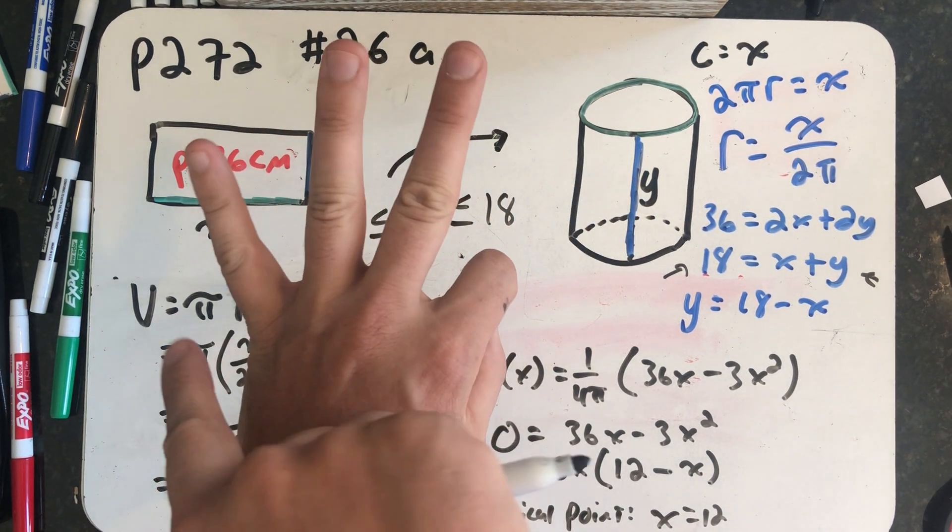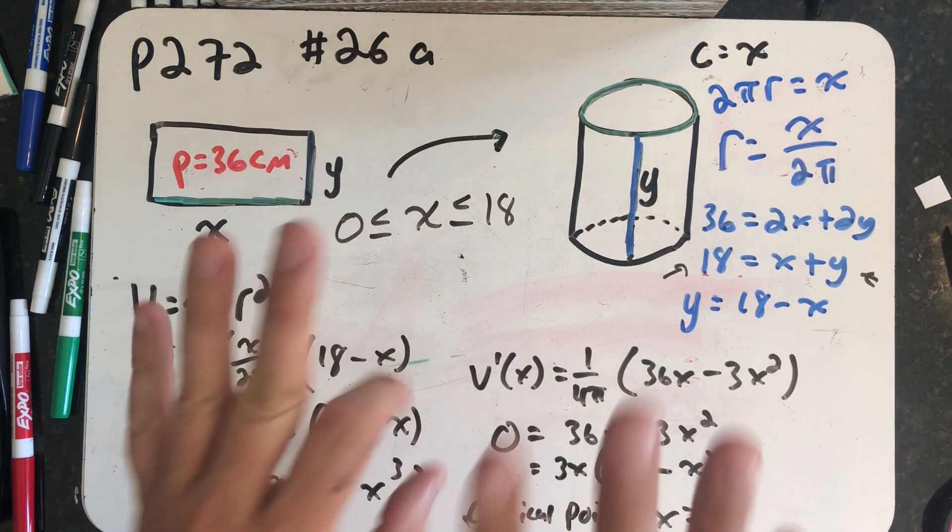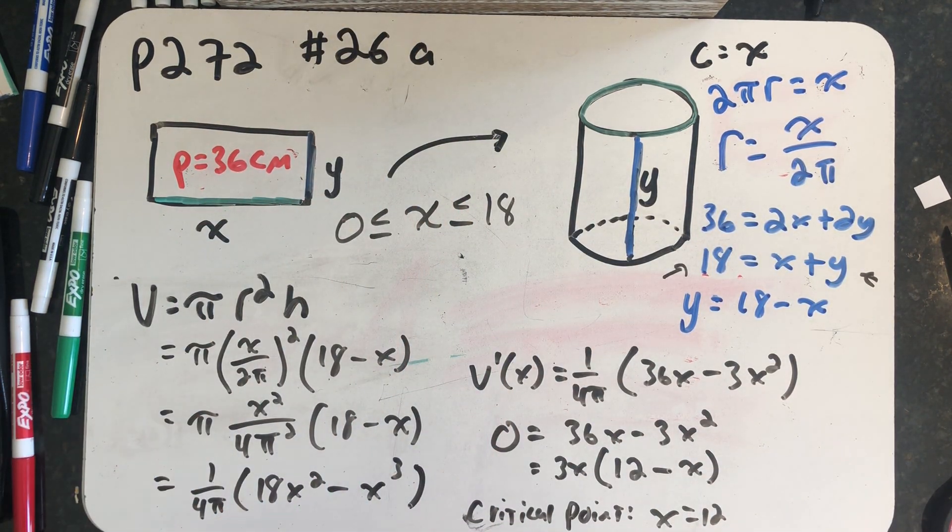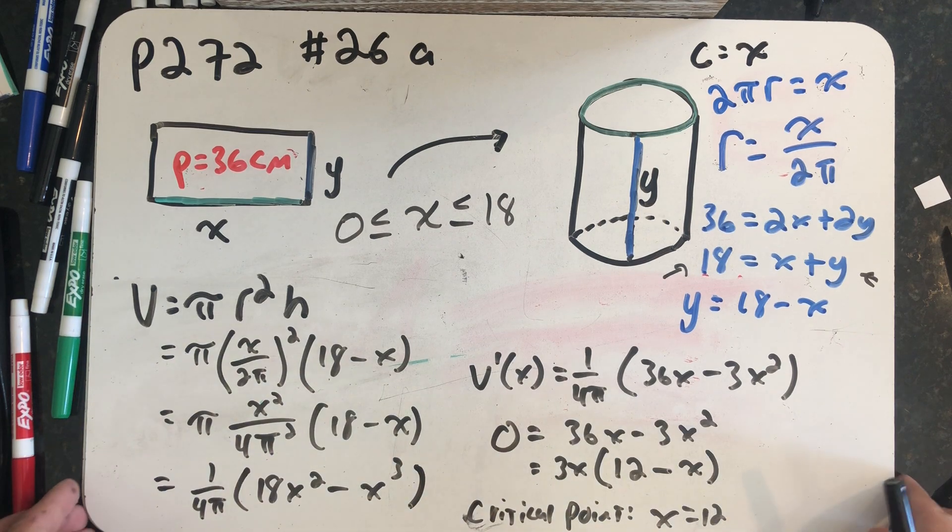And what I want to do now is provide three different ends to this solution, like it was a choose-your-own-adventure. Because we know three different ways to look for absolute mins and absolute maxes, or mins and maxes in general. So we found the critical point and we have a derivative. The first way I want to finish this problem is by using the extreme value theorem.